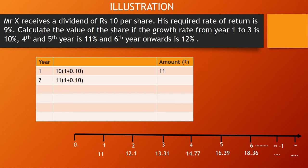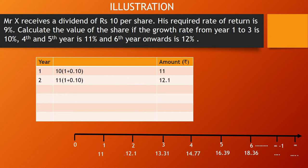Similarly, D2 = D1 × (1 + g). Whatever is the previous dividend received, the growth rate is applied to that particular dividend. D1 is 11, so D2 = 11 × (1 + 0.10) = 12.1. The second dividend is 12.1. The third dividend will be whatever was received in the second year plus 10 percent of that: D3 = 12.1 × 1.10 = 13.31.